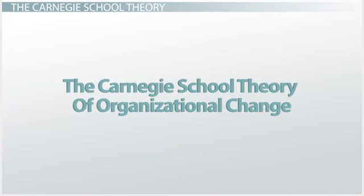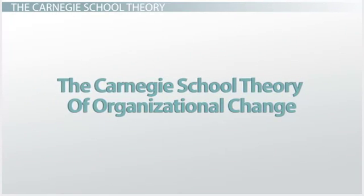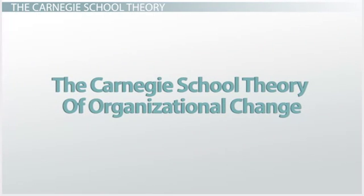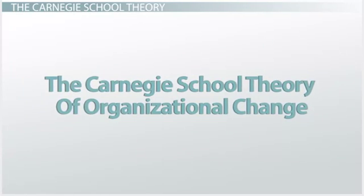The Carnegie view of organizational change was developed in the late 1950s and early 1960s. It focused on studying sources of stabilization and change in an organization. The Carnegie School made three important contributions to organizational change.